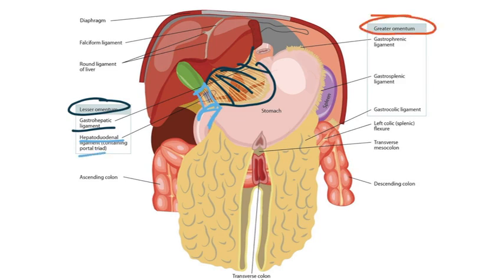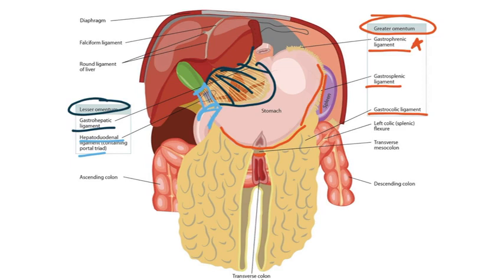Now let's focus on the greater omentum. This has three components: the gastrophrenic ligament, the gastrosplenic ligament, and the gastrocolic ligament. The gastrosplenic ligament extends from the posterior surface of the stomach to the spleen. The gastrocolic ligament extends from the posterior surface of the stomach to the transverse colon. The gastrophrenic ligament — gastro for stomach and phrenic for diaphragm — connects the stomach to the diaphragm, but we're going to focus on the two major components: the gastrosplenic and gastrocolic ligaments.